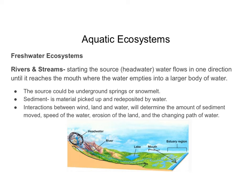Sediment is material that's picked up and redeposited by water. As the water travels downhill, rocks, minerals, sand, and silt get picked up and deposited in different areas of the river. The interactions between wind, land, and water determine the amount of sediment moved, the speed of the water, erosion of the land, and the changing path of the water.